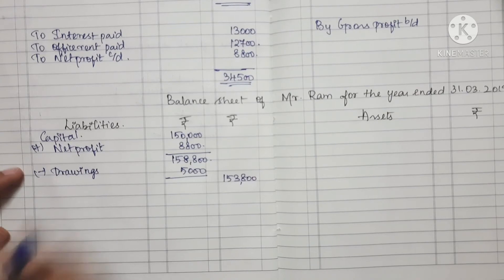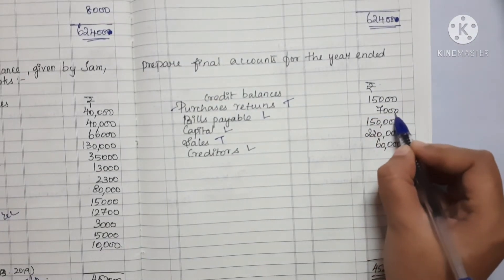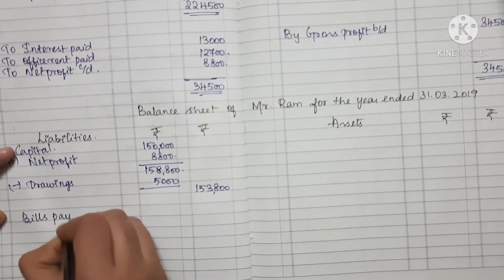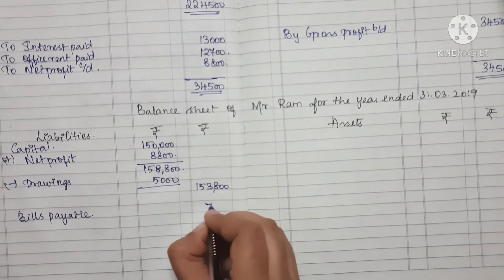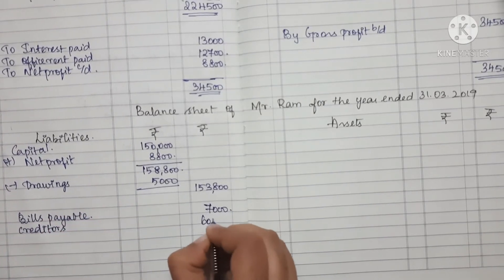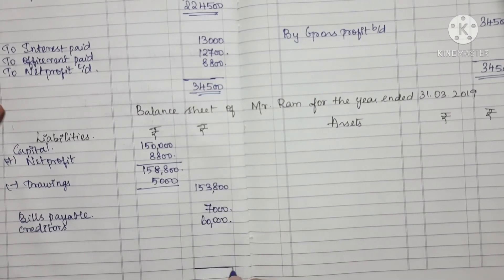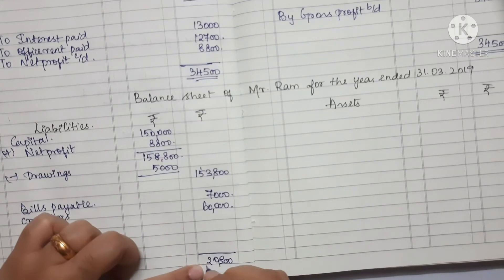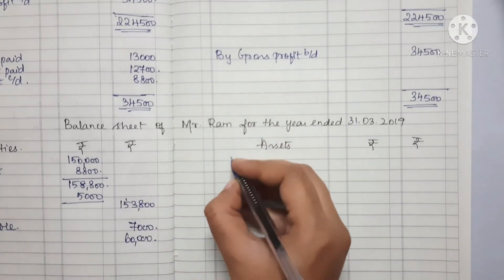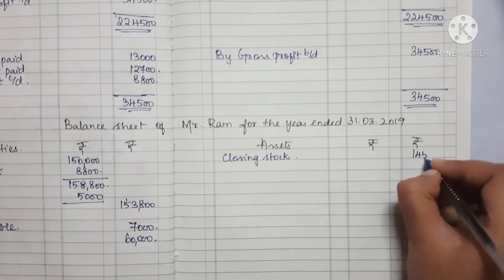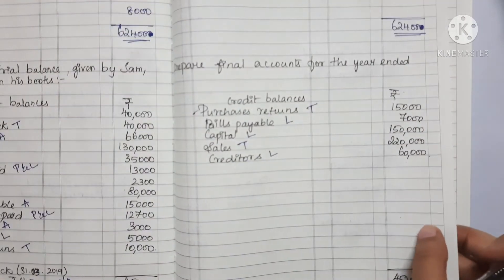Capital plus Net Profit minus Drawings. Next, Creditors and Bills Payable: Bills Payable amount is 7,000, Creditors is 60,000. If we add these to Capital, we get the total liabilities.